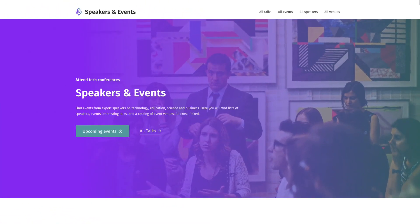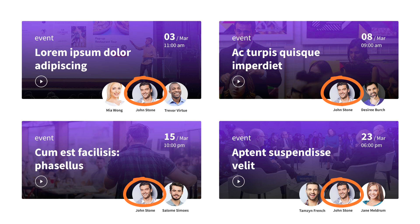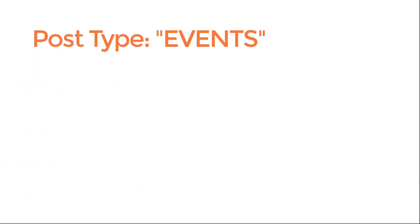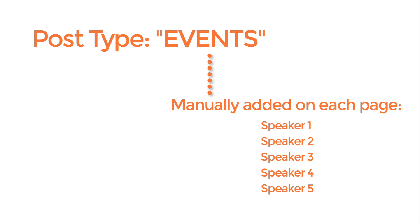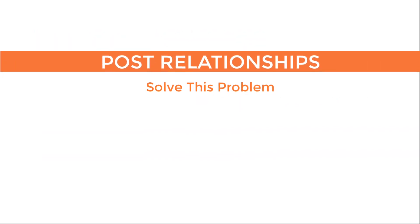We'll build a website for events. Each event will list several speakers. Of course, each speaker can appear in different events. You could build this website with a single custom post type called events and list each speaker in a table. But what if you need to update the photo of the speaker, in this case John Stone? You'd need to manually edit each event John is in. Post relationships solves this problem.